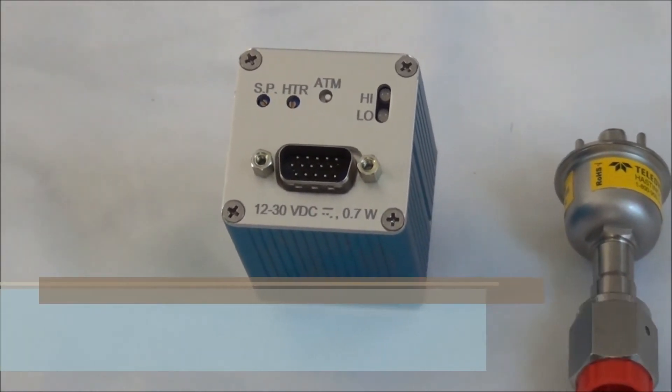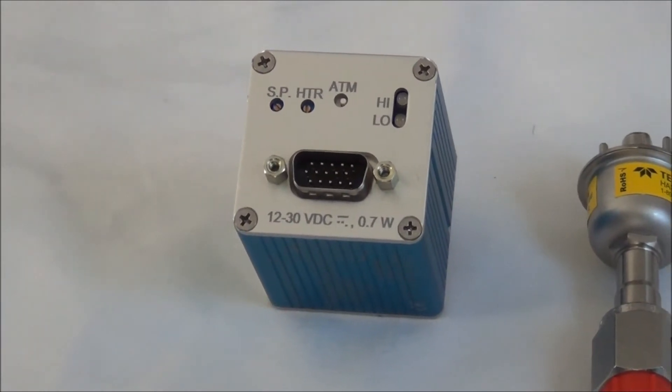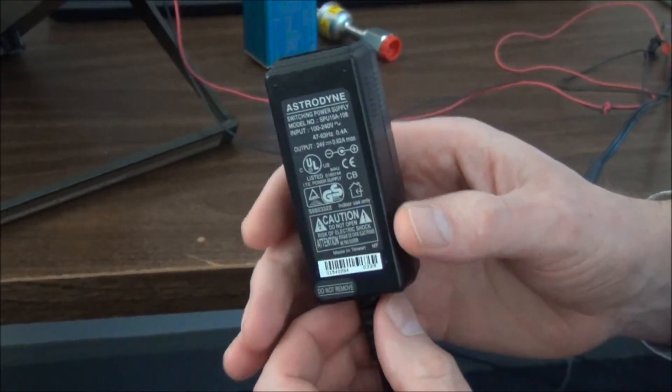So one nice thing is that whenever the gauge is powered, you're always going to see a light so that you know the unit is powered on. Now to power the DAVC, we just need a low-cost DC power supply.